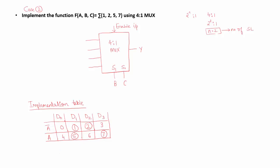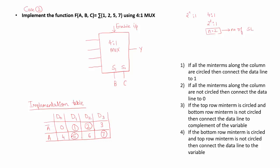To determine what must be connected to each of the data line, there are 4 rules. First rule is, if all the minterms along the column are circled, then connect the data line to 1. Second rule is, if all the minterms along the columns are not circled, then connect the data line to 0.